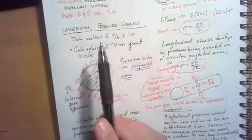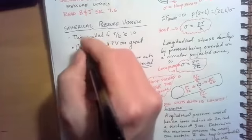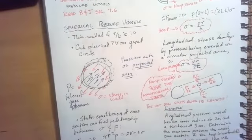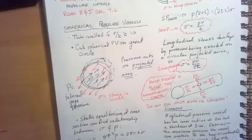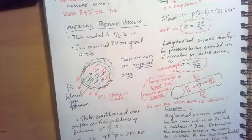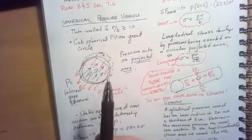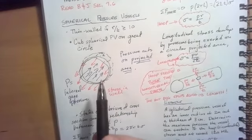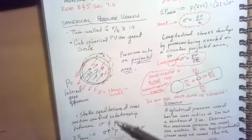For spherical pressure vessels, we're considering them thin walled if the ratio of the radius to the wall thickness is greater than or equal to 10. If it's less than 10 we wouldn't want to apply these solutions to that case, but for this particular problem it's perfectly fine to do so if the radius is more than 10 times the thickness. Let's take a look at the case of the spherical pressure vessel.